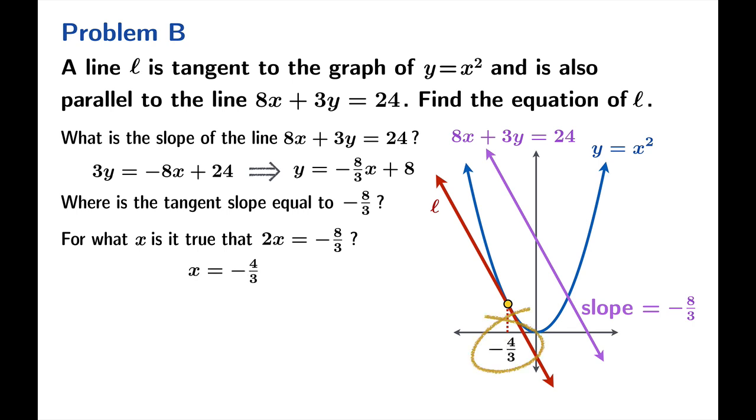So this argument we're looking for is negative 4 thirds. And therefore when we square negative 4 thirds, we get 16 ninths. The point of tangency is the point negative 4 thirds comma 16 ninths.